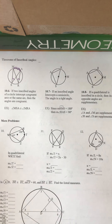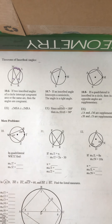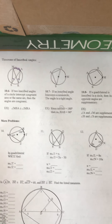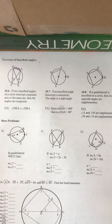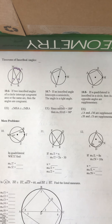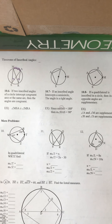That also applies if you have two congruent arcs and angles intercepting those arcs — then they'll be congruent. But here we have two inscribed angles intercepting the same arc, so they are automatically congruent.